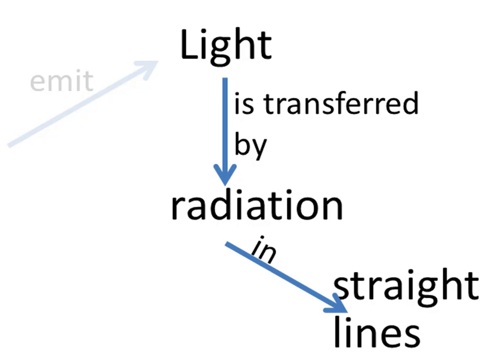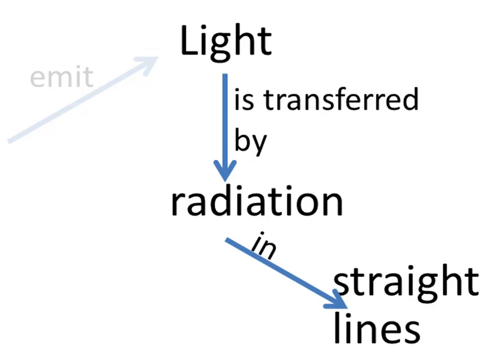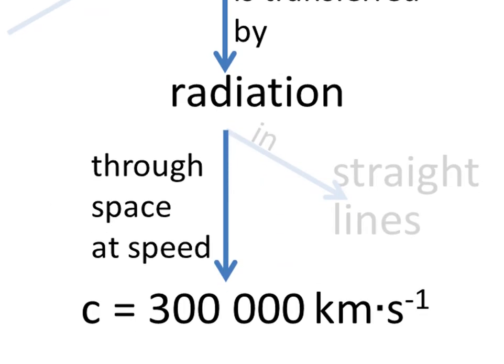When light is travelling through a vacuum—a vacuum means emptiness, like in outer space—it travels at a speed called c. And c, which is the speed of light, is 300,000 kilometres per second.